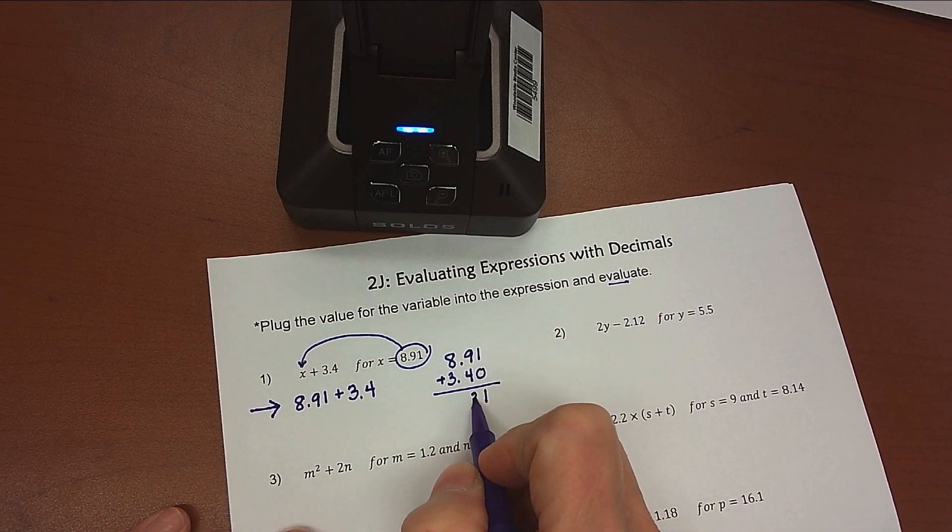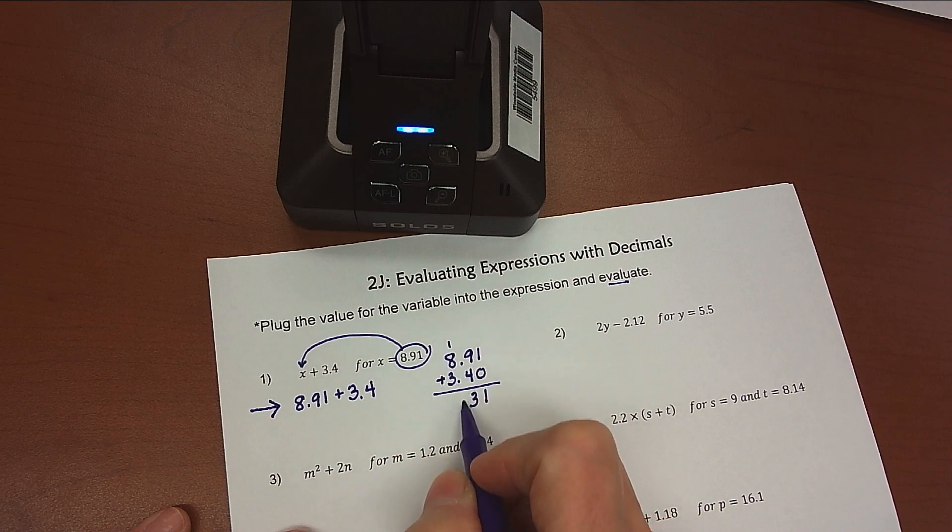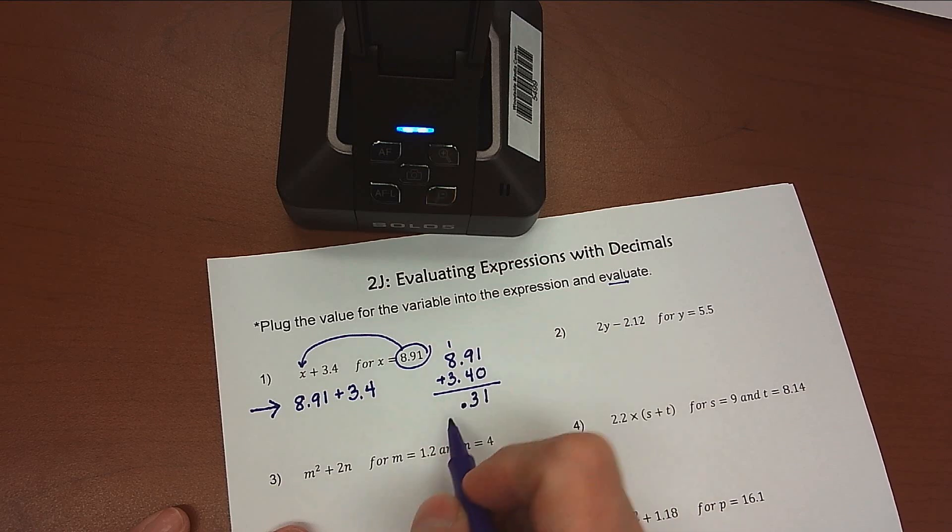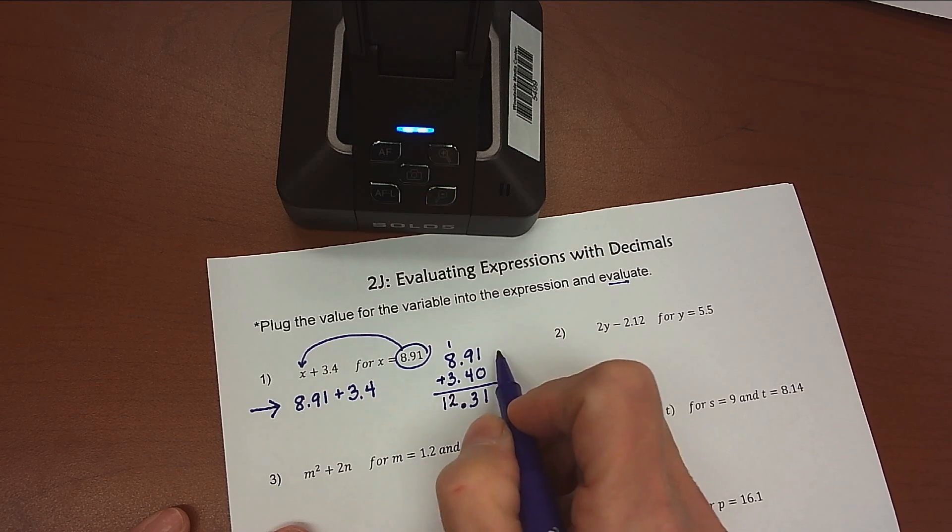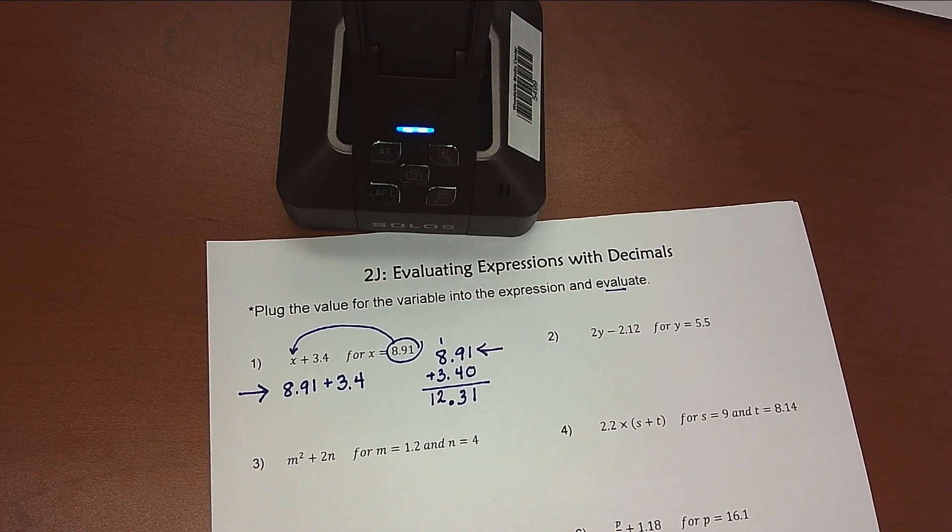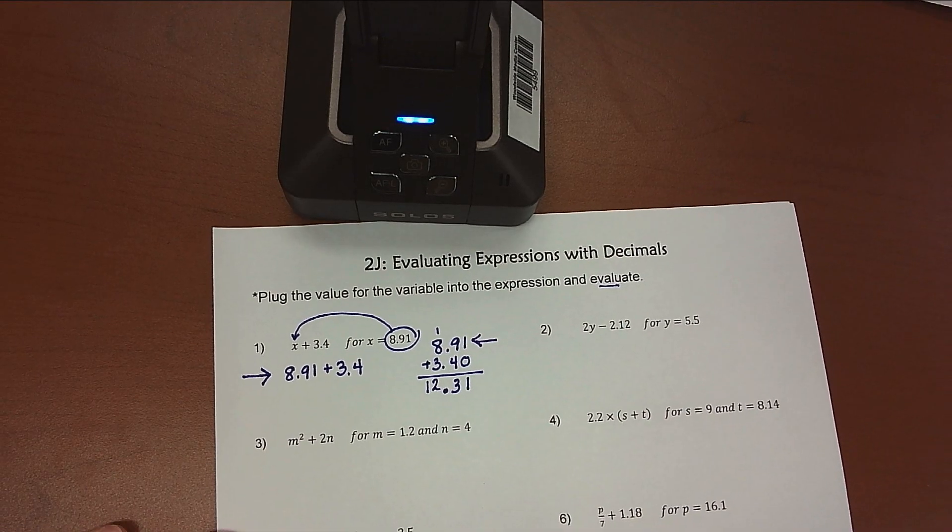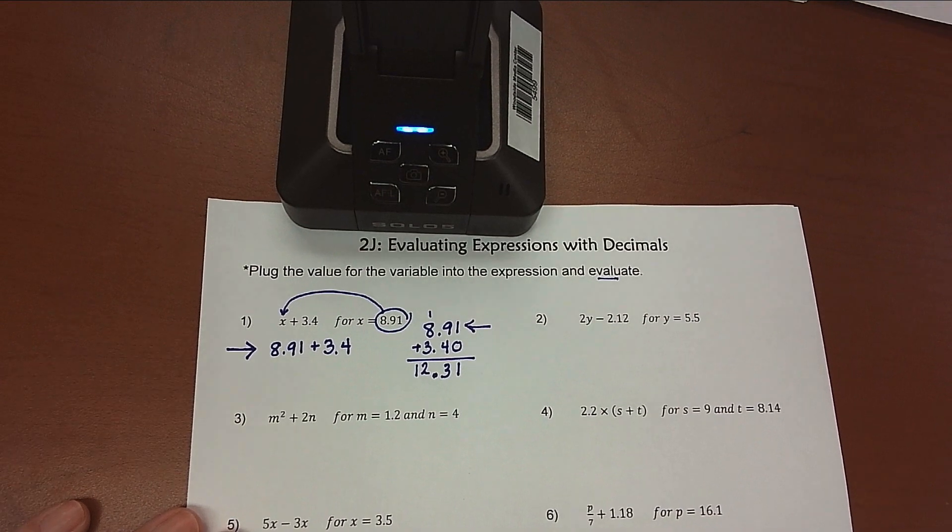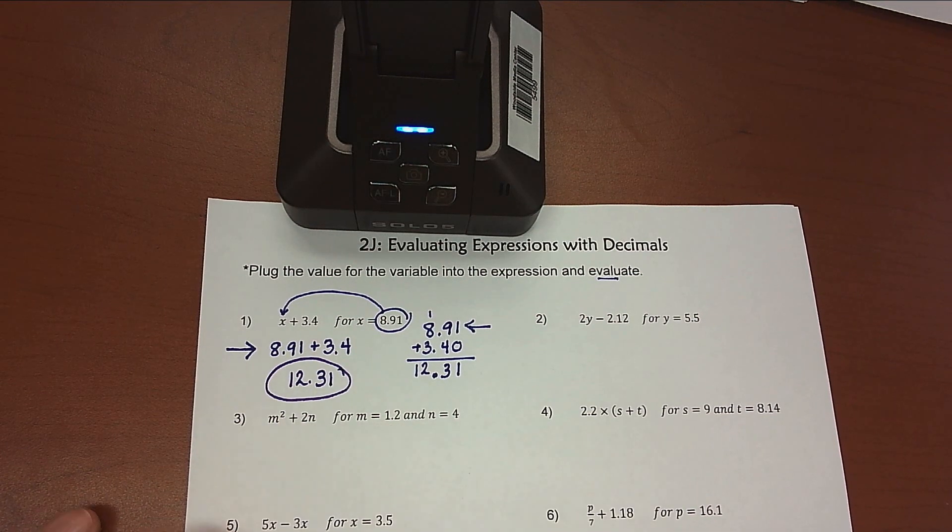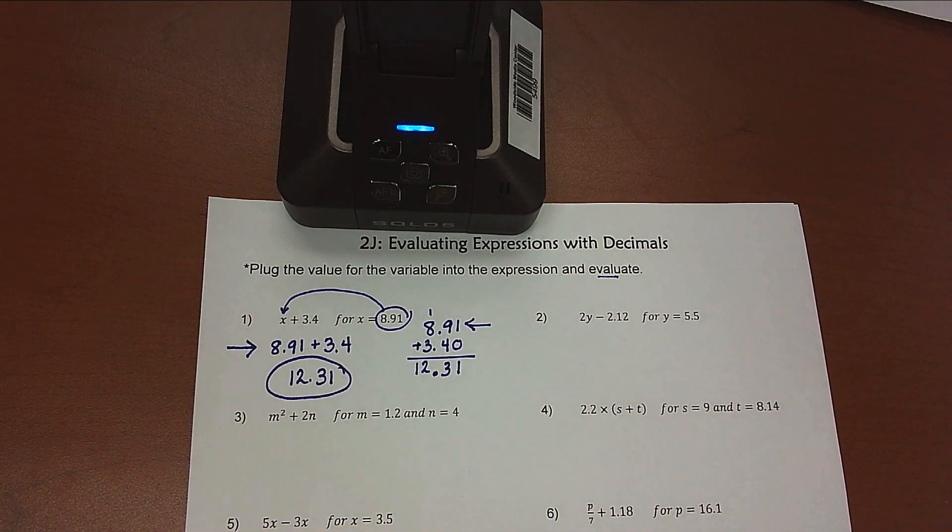9 plus 4 is 13, carry my 1, bring that decimal point straight down, and then 8 and 3 is 11, plus 1 more is 12. And so here's my second necessary item to get full credit. I'm going to show my work. And then finally, I like to write my answer down, and I like to circle it so that I can find it easily when I'm going back to check.